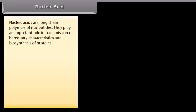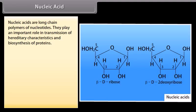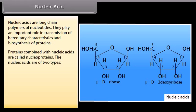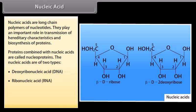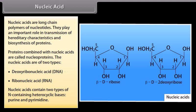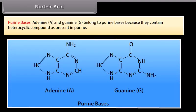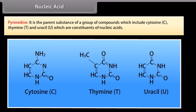Nucleic acids are long-chain polymers of nucleotides. They play an important role in the transmission of hereditary characteristics and biosynthesis of proteins. Proteins combined with nucleic acids are called nucleoproteins. Nucleic acids are of two types: deoxyribonucleic acid (DNA) and ribonucleic acid (RNA). Nucleic acids contain two types of nitrogen-containing heterocyclic bases — purines and pyrimidines. Purine bases include adenine and guanine. Pyrimidine bases include cytosine, thymine, and uracil, which are constituents of nucleic acids.